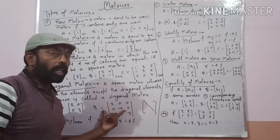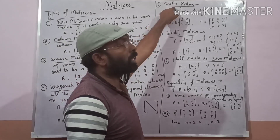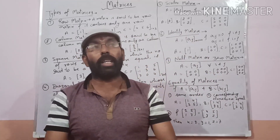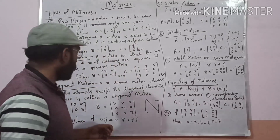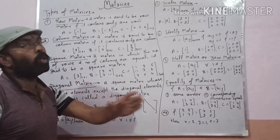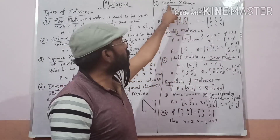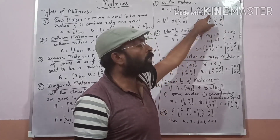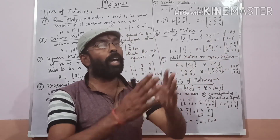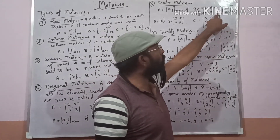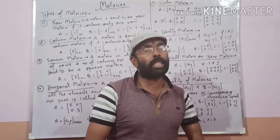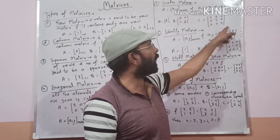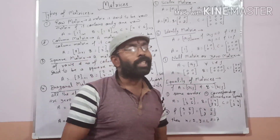Next topic is scalar matrix. A diagonal matrix is called a scalar matrix if Aij equals k for all i equal to j. The diagonal elements are a fixed value k where k is a scalar quantity. That means diagonal elements are all the same — for example, [2 0; 0 2] or [5 0 0; 0 5 0; 0 0 5]. These are called scalar matrices.